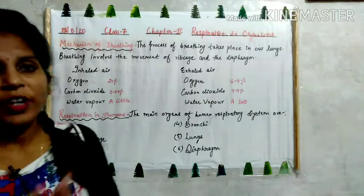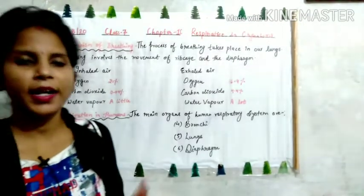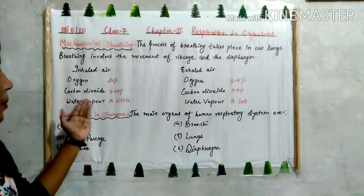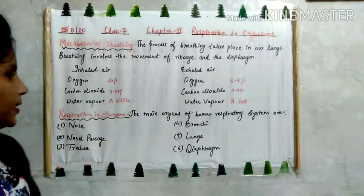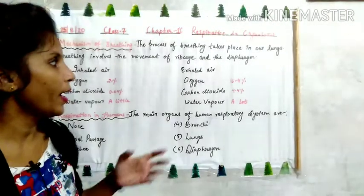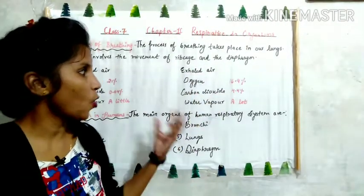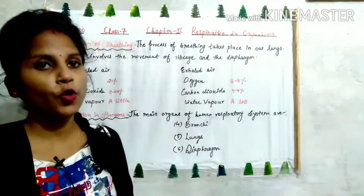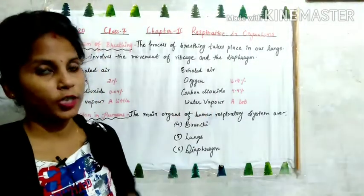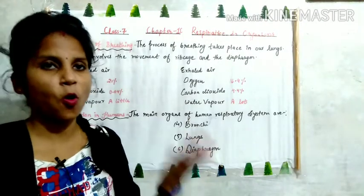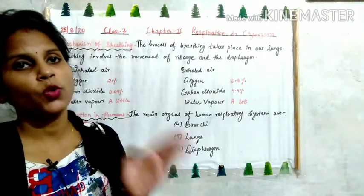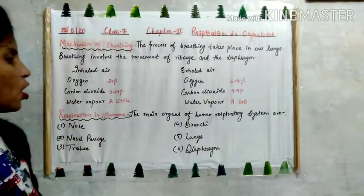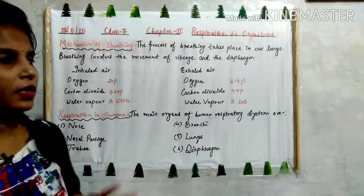When we breathe, we inhale and exhale air. Inhaled air contains: oxygen 21%, carbon dioxide 0.04%, and a little water vapor. While exhaled air contains: oxygen 16.4%, carbon dioxide 4.4%, and a lot of water vapor. So in exhaled air, oxygen is less and carbon dioxide and water vapor are more, while in inhaled air, oxygen is more and carbon dioxide and water vapor are less.